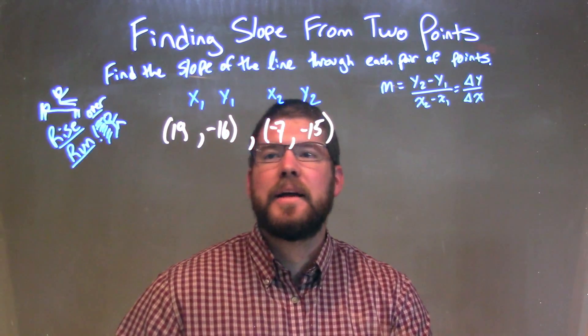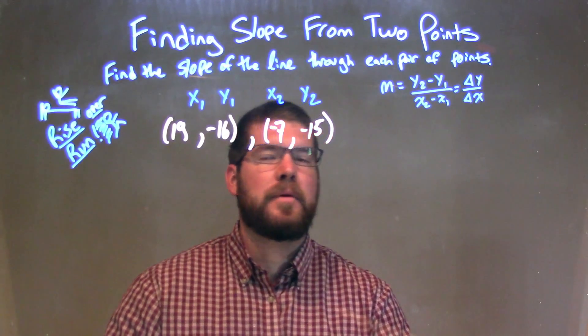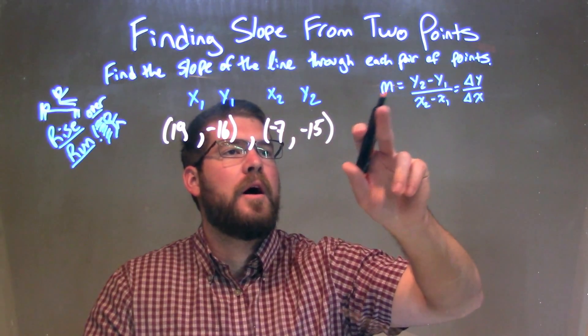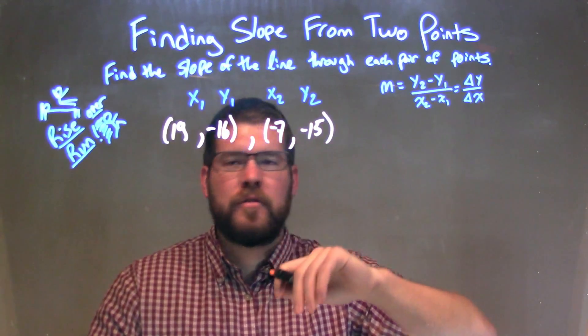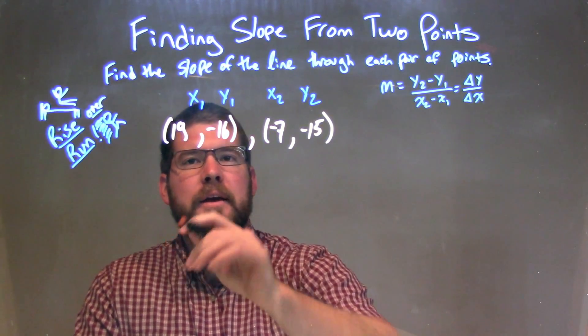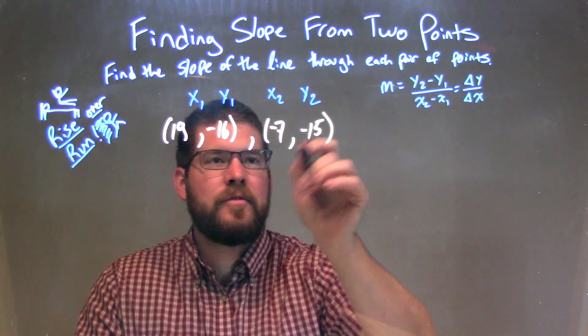So I have 19, negative 16, and negative 7, negative 15. My slope formula is M equals Y2 minus Y1 over X2 minus X1. I'm going to apply it here. I've labeled my X1, Y1, X2, Y2.